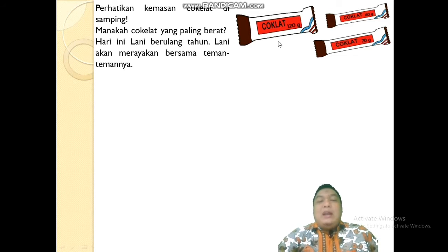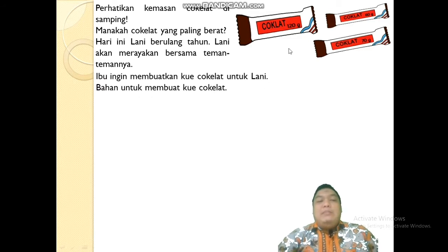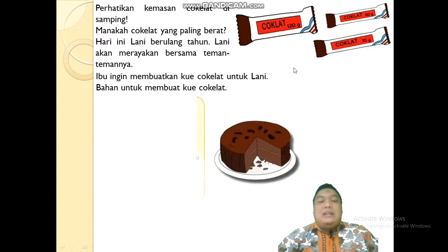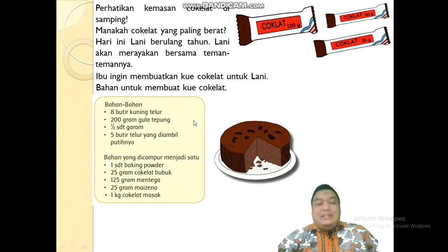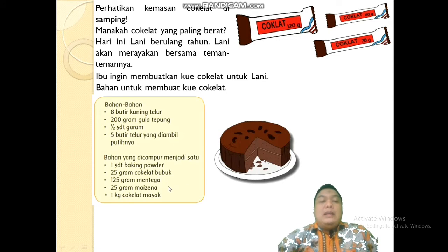Hari ini Lani berulang tahun. Lani akan merayakan bersama teman-temannya. Ibu Lani ingin membuatkan kue coklat untuk Lani. Bahan-bahannya: 8 butir kuning telur, 200 gram gula tepung, setengah sendok teh garam, 5 butir telur yang diambil putihnya. Bahan yang dicampur menjadi satu: 1 sendok teh baking powder, 25 gram coklat bubuk, 125 gram mentega, 25 gram maizena, dan 1 kilo coklat masak.